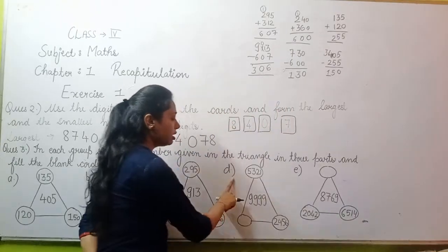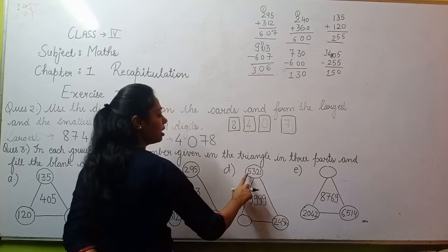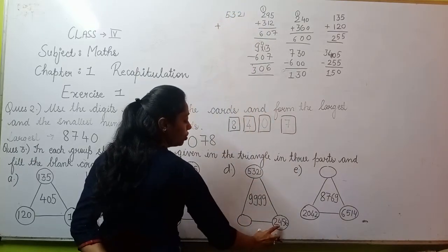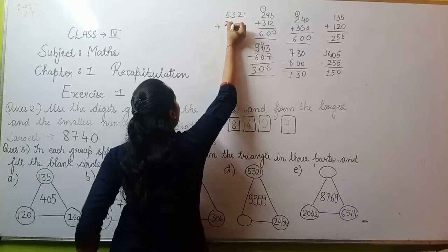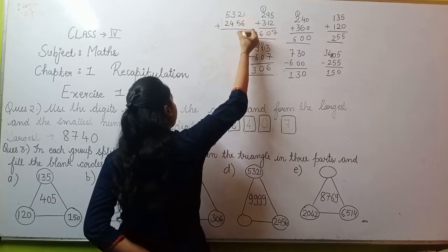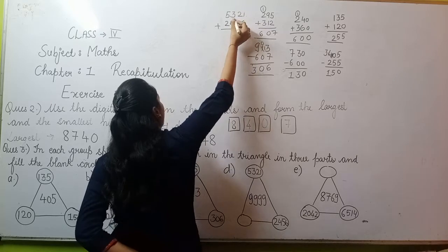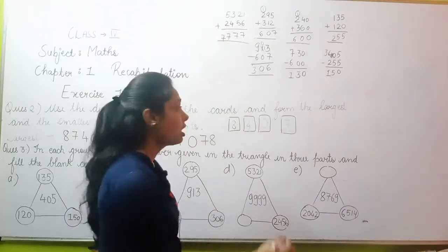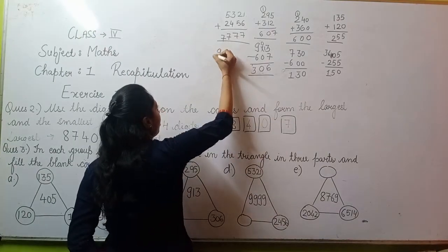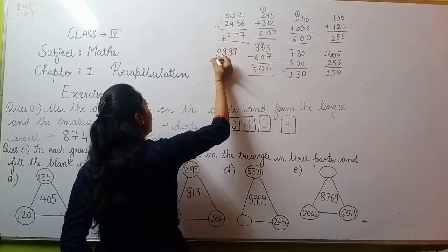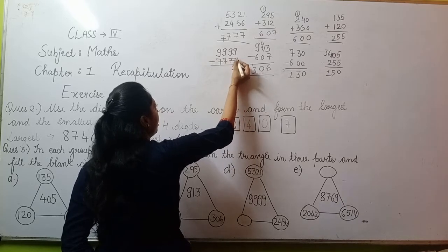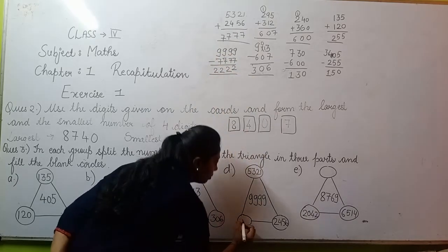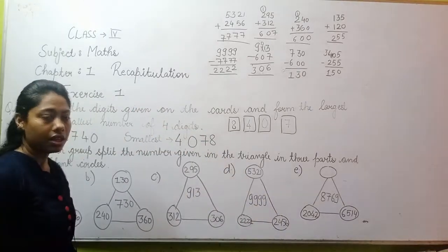Moving to the next part, part D. Again two circles given, add them. 5321 plus 2456: 1 plus 6 is 7, 2 plus 5 is 7, 3 plus 4 is 7, 5 plus 2 is 7. Wow, what a nice number, 7777 is your number. Now subtract this from the triangle number, 9999 minus 7777. 9 minus 7 is 2, 9 minus 7 is 2, 9 minus 7 is 2, 9 minus 7 is 2. So the answer is 2,222. You will write this in the circle.